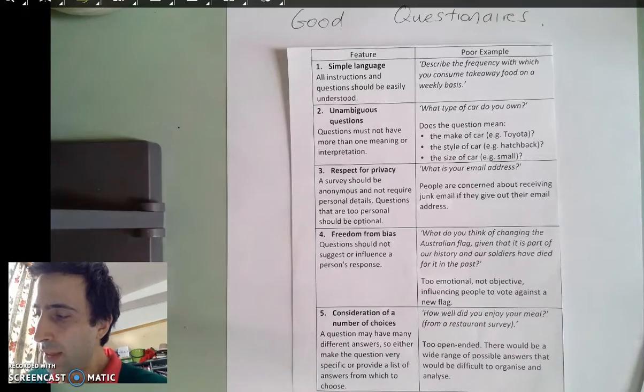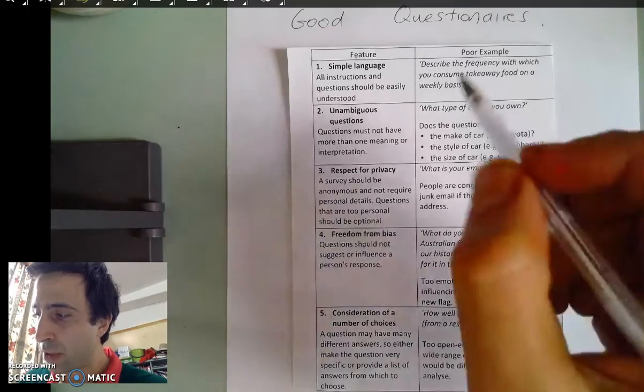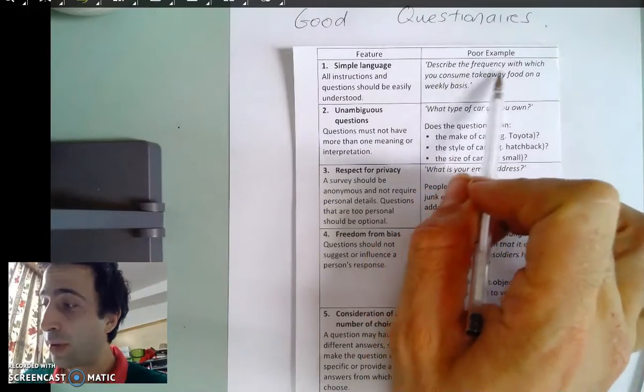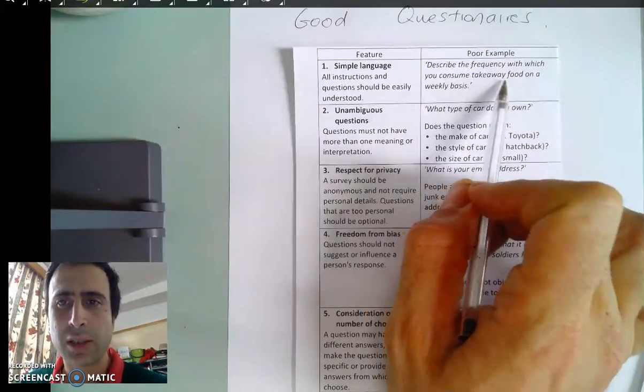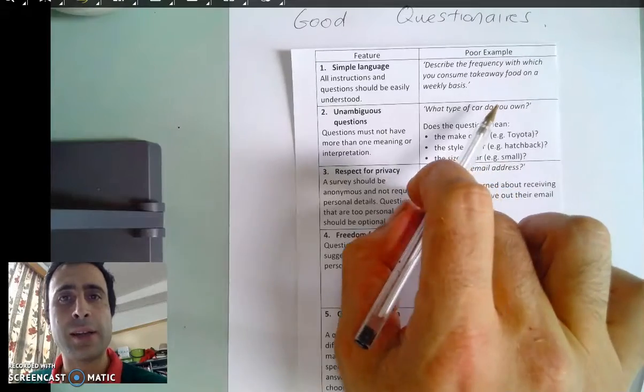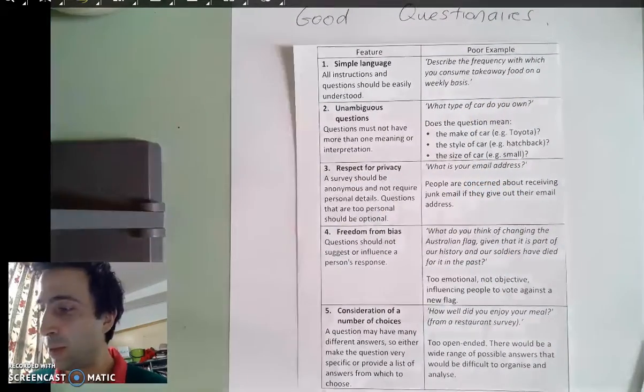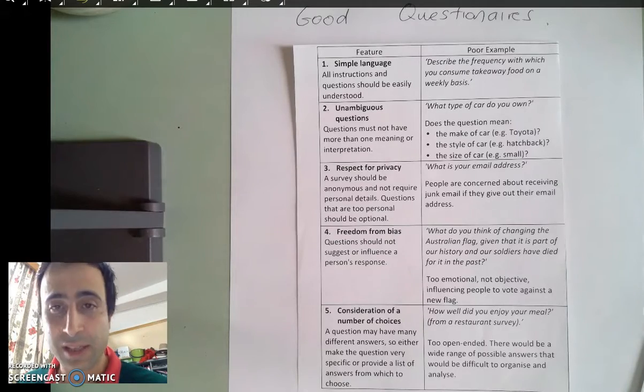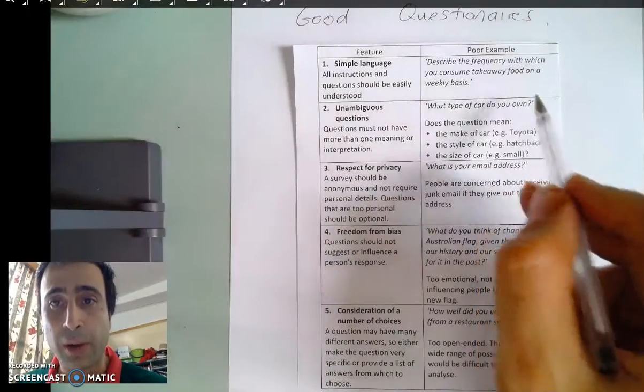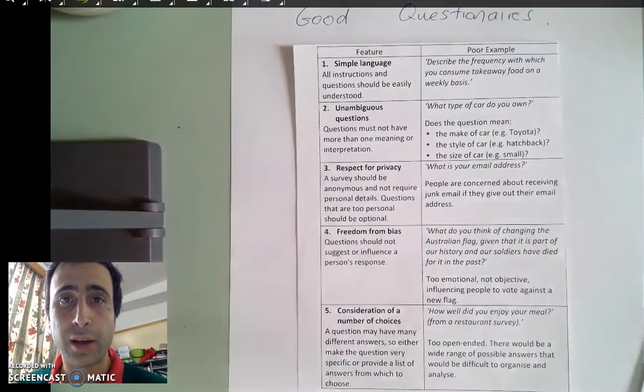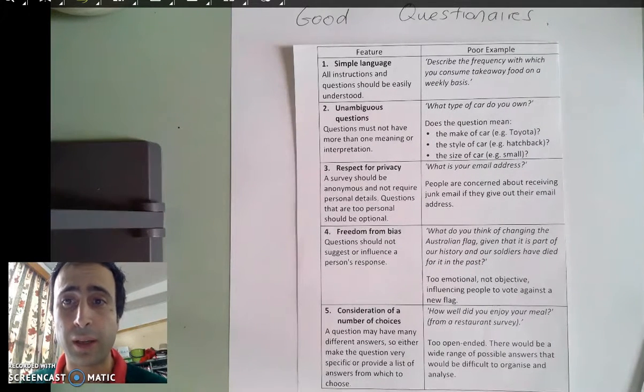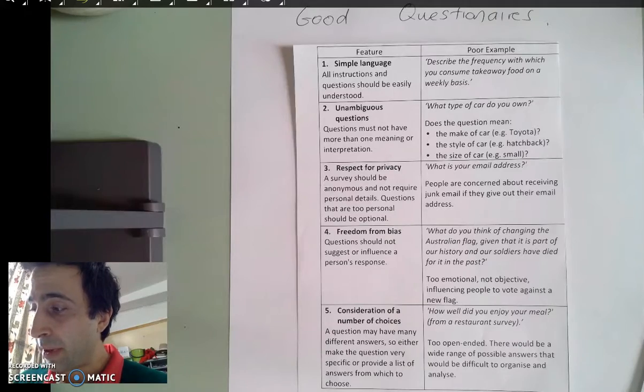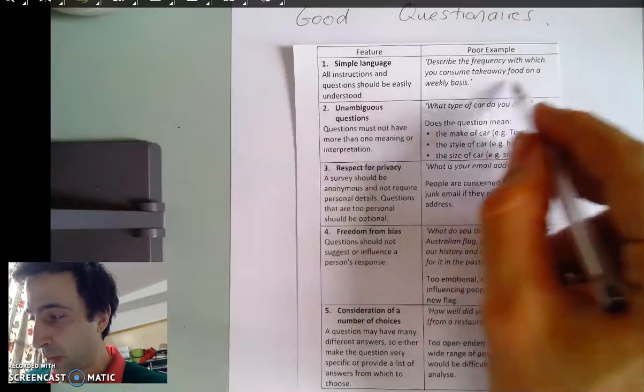An example of simple language: if you say 'describe the frequency with which you consume takeaway food on a weekly basis,' that's unnecessarily verbose and using words you don't need. You could just say 'do you eat takeaway food every week or on a weekly basis?' This is a poor example that can be rewritten.